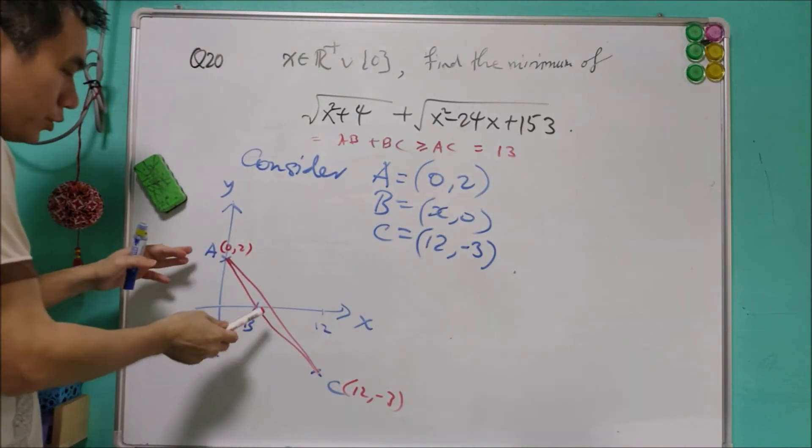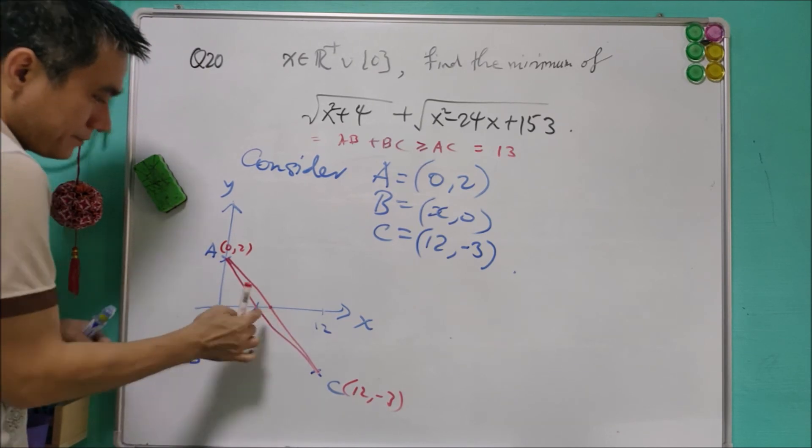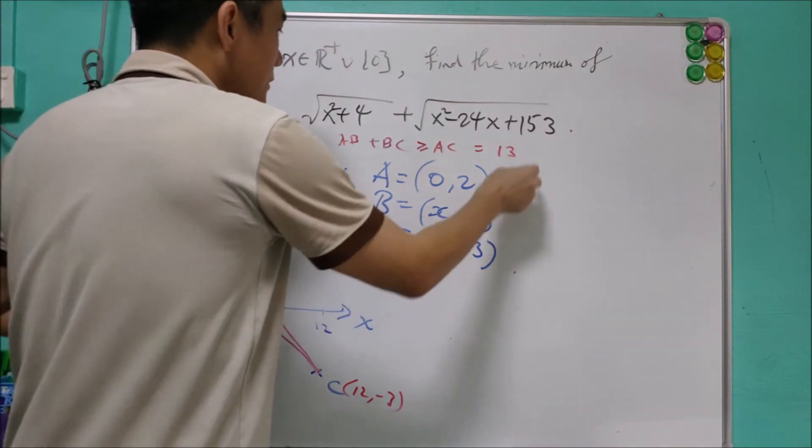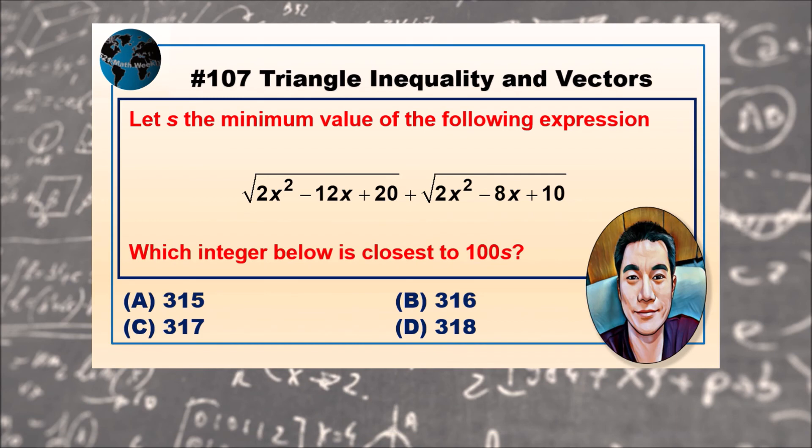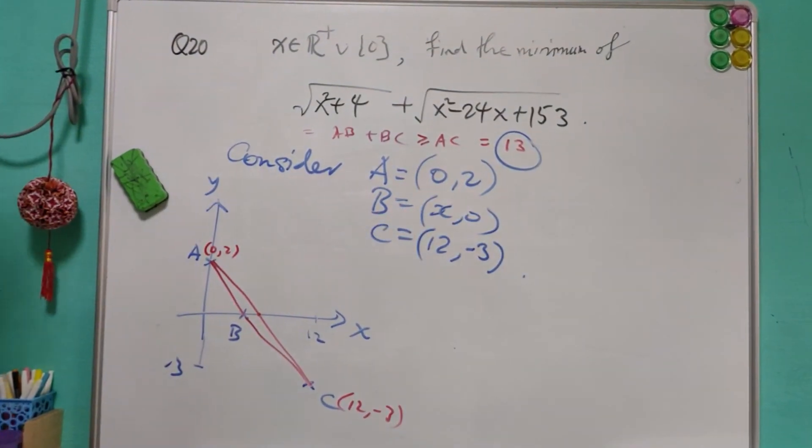And the equality holds if we move the point B to this point here. It is possible to achieve. And therefore, again, we confirm that 13 is the answer. 13 is the answer for question 20.